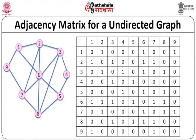For a larger undirected graph with 9 nodes, you have a 9×9 matrix. Taking the first row, node 1 has edges to nodes 2, 6, and 9, so those positions get a 1. Node 2 has edges to 1, 3, 6, and 7, and so on. This is the adjacency matrix of an undirected graph.